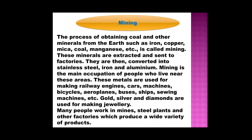Mining. The process of obtaining coal and other minerals from the earth — such as iron, copper, mica, coal, manganese, etc. — is called mining. These minerals are extracted and sent to factories, where they are converted into stainless steel, iron and aluminium. Mining is the main occupation of people who live near these areas. These metals are used for making railway engines, cars, machines, bicycles, aeroplanes, buses, sewing machines, etc. Gold, silver and diamonds are used for making jewellery. Many people work in mines, steel plants and other factories which produce a wide variety of products.